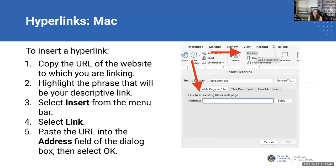Similarly on a Mac: first make sure you copy the URL of the website you're about to use. Highlight the phrase you want to be your descriptive link. Select Insert from the menu bar, select Link, then put in the URL as the address and hit OK.